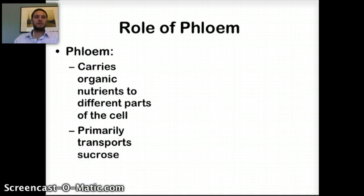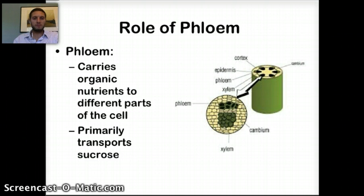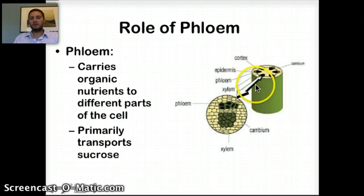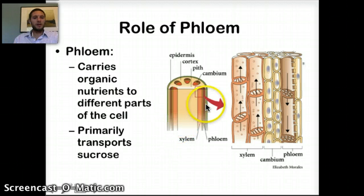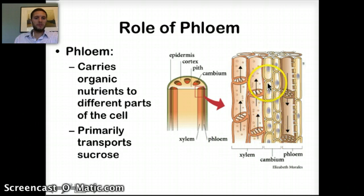Now let's get into the specifics of the phloem. Its primary job is to carry organic nutrients — minerals, ions, and sugars, primarily sucrose — to different parts of the plant. Here's a cross-section image showing the xylem and phloem separated by the cambium, along with the cortex and epidermis. In a more detailed image, we can see this vertical transport tube in which water moves through the xylem and sucrose through the phloem, with the cambium separating the two structures.